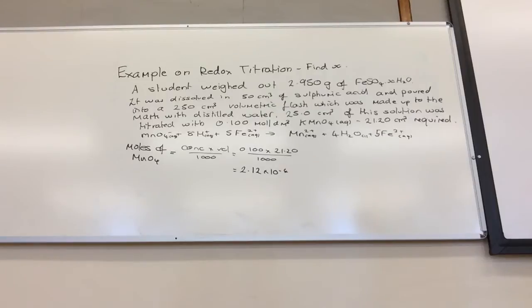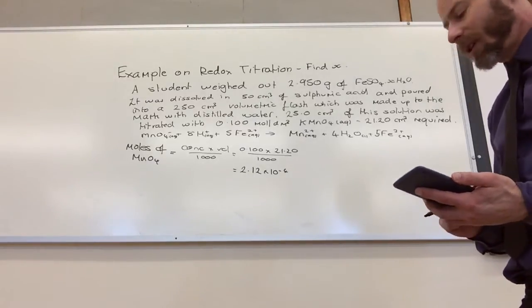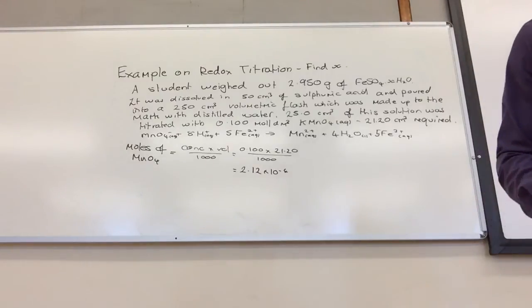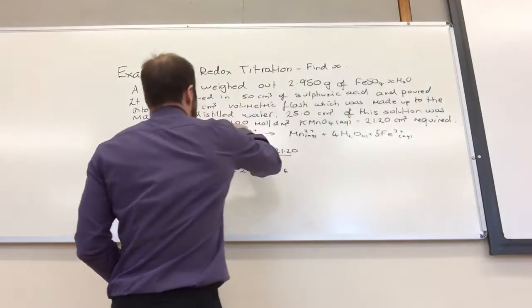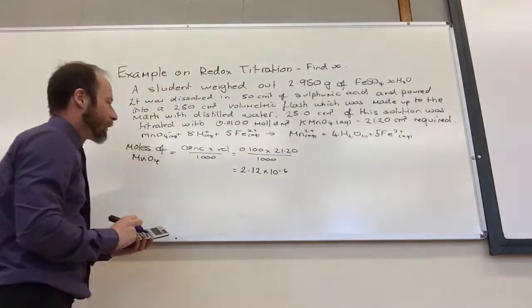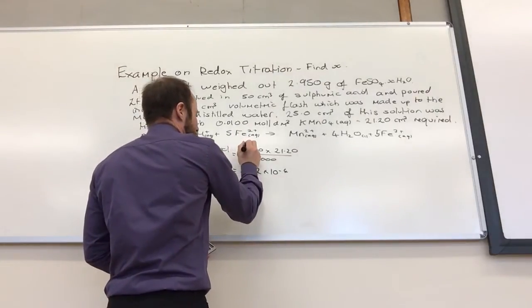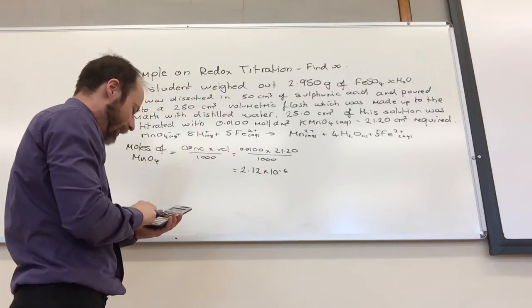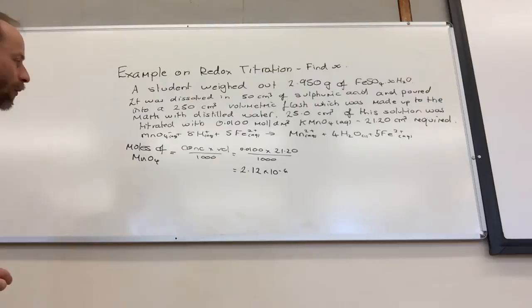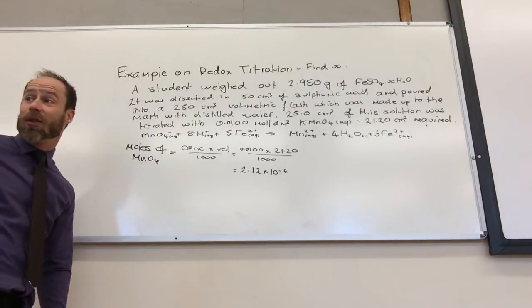Okay, once we've got that, what are we going to now do? What do we need to relate that to? Is that right? What have I done? Is that 10 to minus 3? If I put the wrong concentration down... Yeah. Sorry, that should be 0.01, otherwise it's going to get to a crazy answer. Okay. Times 21.2 divided by 1000, and that gives me 2.12 times 10 to the minus 4.